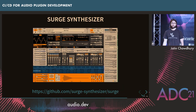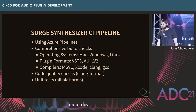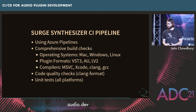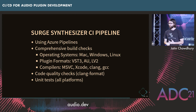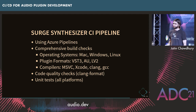The Surge synthesizer is a really great open source project if you're looking for one to contribute to — a really nice community of developers and users working together. They have a very nice CI pipeline set up using Azure Pipelines. They have very comprehensive build checks: Mac, Windows, Linux, all plugin platforms, and all different compilers work. They have code quality checks, unit tests, and — I was just reminded the other day — they have Python bindings for their plugin with a CI check that builds those and runs tests too. It's really comprehensive.